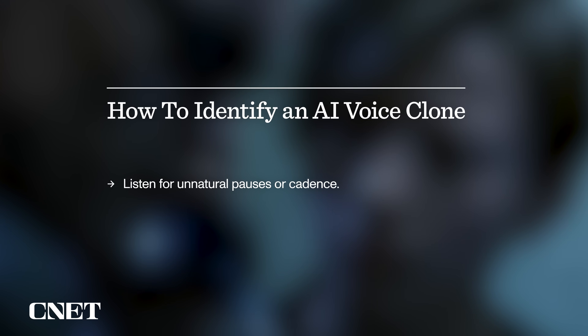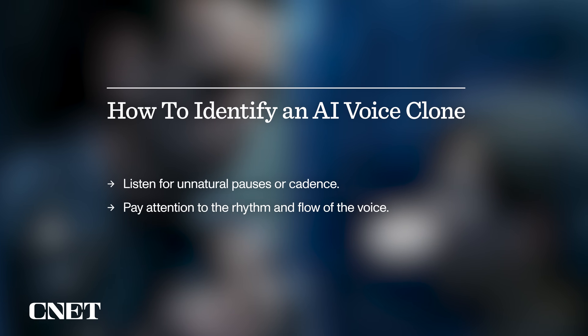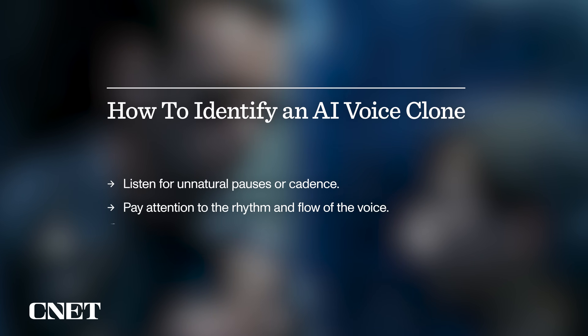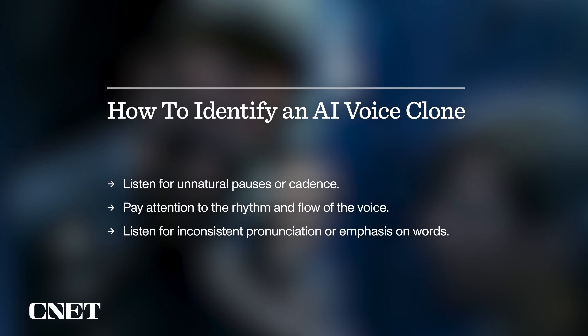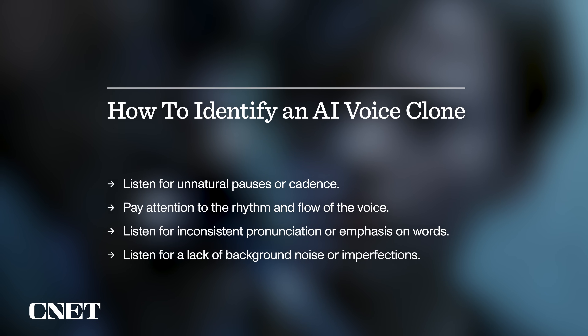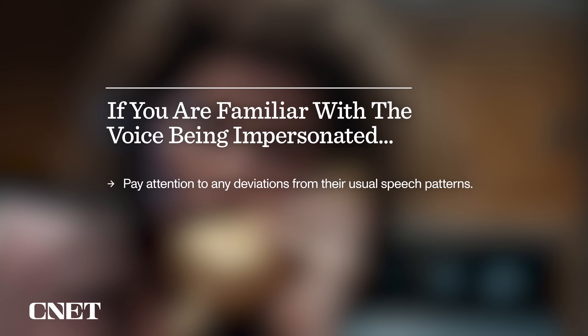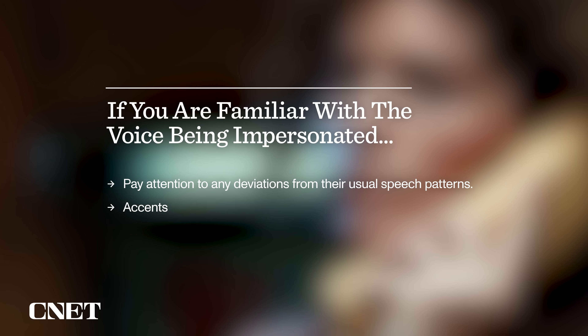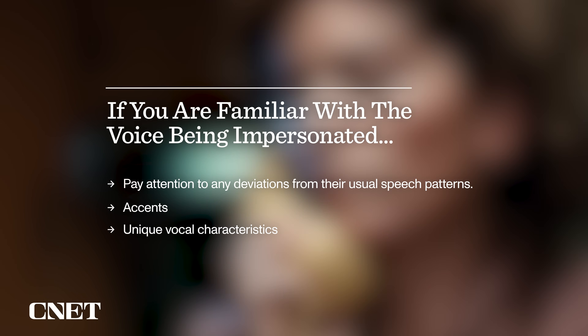If you do encounter what you think might be an AI voice clone trying to impersonate someone you know, here are some tips to identify it. Listen for unnatural pauses or cadence. Pay attention to the rhythm and flow of the voice, and listen for inconsistent pronunciation and emphasis on words. There may be a lack of background noise or imperfections — like right now I'm in a big room, so you might be able to hear my voice bouncing off the walls. If you're familiar with the voice of the person being impersonated, pay attention to any deviations from their usual speech patterns, accents, or unique vocal characteristics.